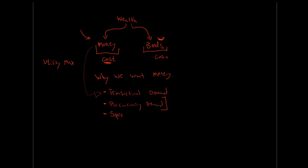Our final reason to carry money is our speculative demand, and this is our most volatile rationale for holding cash. What's going on with speculative demand is that it's based off of speculation about what's happening in bond markets. We might decide we think something's going to happen in the bond market such that bond prices are going to crash. If bond prices are going to crash, we'll sell our bond portfolio today and move into money — that's a spike in speculative demand for money — and then once the event has happened or not happened, we can move back into bonds.